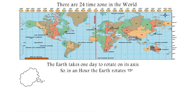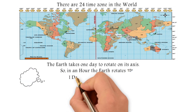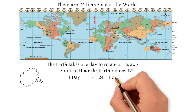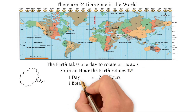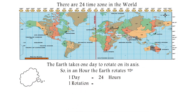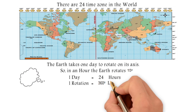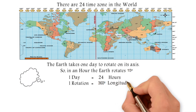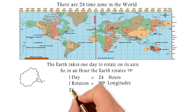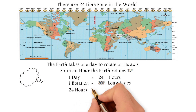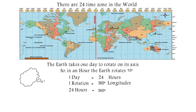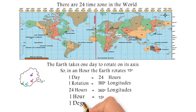How? For one day it is 24 hours, and one full rotation is 360 degrees of longitude. So in 24 hours, the Earth rotates 360 degrees. Therefore, in one hour, the Earth rotates 15 degrees of longitude. For one degree of rotation, it takes 4 minutes.